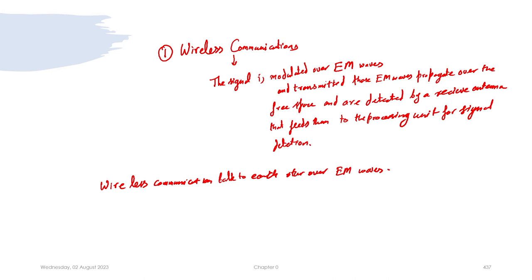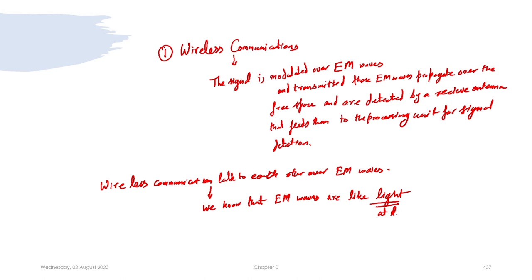Going back to Maxwell's postulations, electromagnetic waves behave like light — you can say electromagnetic waves are light. The consequence of lower wavelengths is something we will come to shortly.